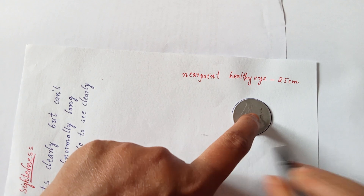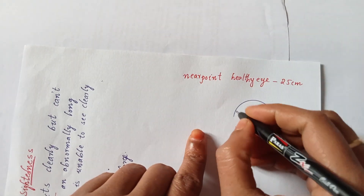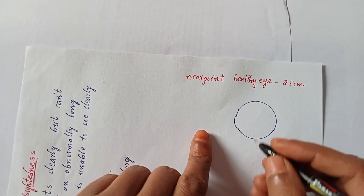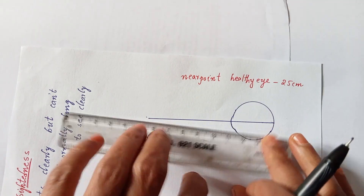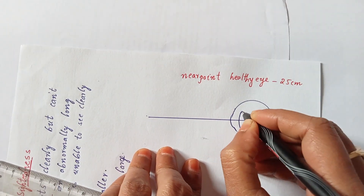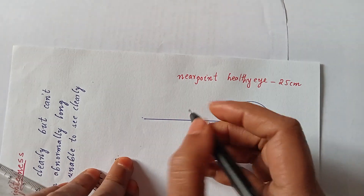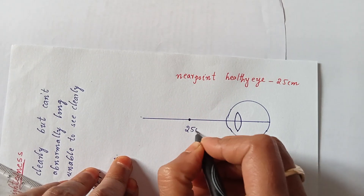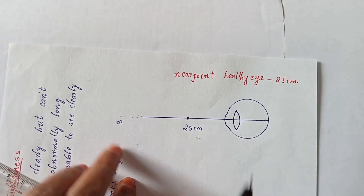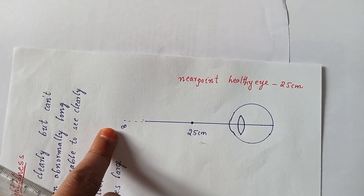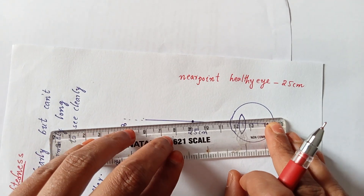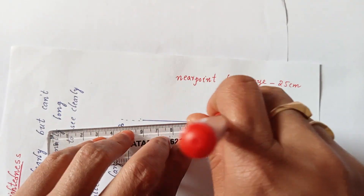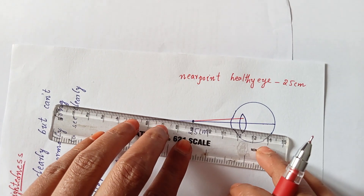Now, draw the line, and exactly bisecting the eye draw the convex lens of the human eye. The object is at 25 cm — this is the near point of the healthy human eye. The far point is at infinity; we don't have any problem there. From 25 cm you have to draw divergent rays towards the eye. Use scale and pencil — I am using red color so you can see clearly, but in your exam draw with pencil.